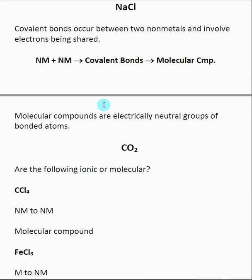Molecular compounds are different because we're not transferring electrons, so we're not forming positively and negatively charged species — they're electrically neutral, held together by a different force that we will discuss later. For now, one skill you need to develop is: if you see a compound, you should be able to tell whether it is ionic or molecular, and therefore whether you expect ionic bonds or covalent bonds.